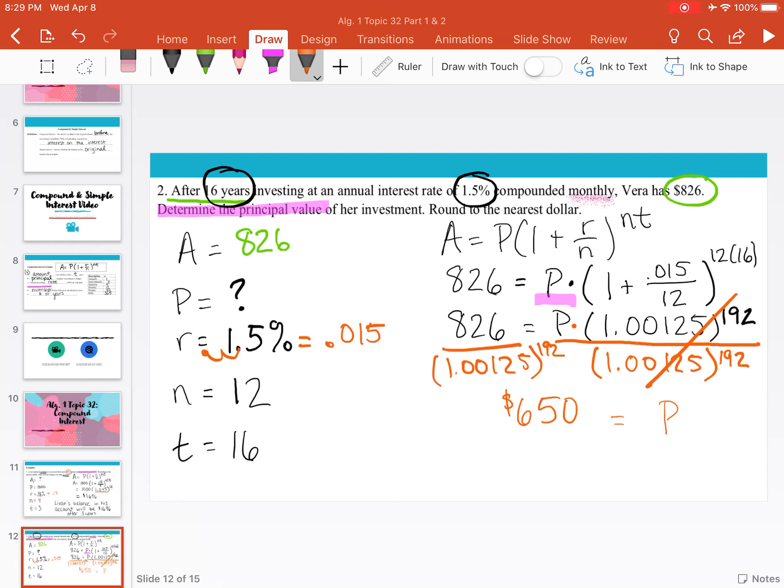In other words, the principal amount that Vera puts into her account is $650. And after she compounds it with an interest rate of 1.5%, compounded monthly for 16 years, she ends up with $826. So Vera's principal amount is $650.